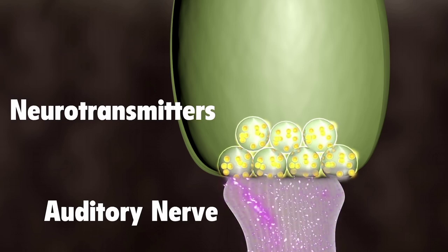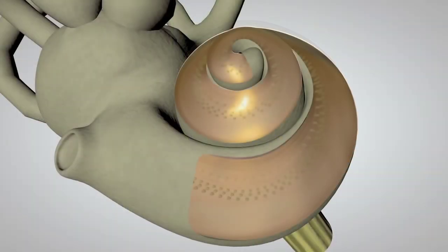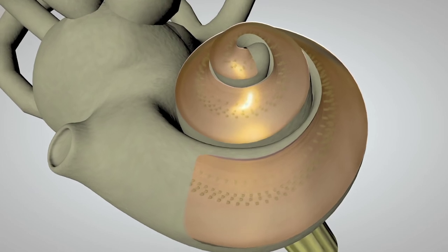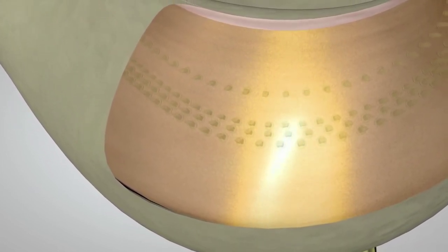which travels along the auditory nerve to the brain. Different hair cells respond to different frequencies of sound. The hair cells at the base of the cochlea detect higher-pitched sounds, such as a piccolo or flute.